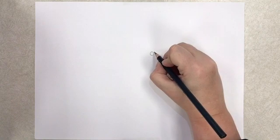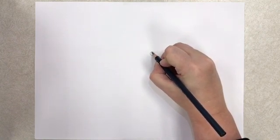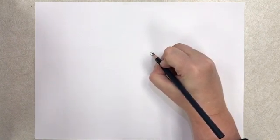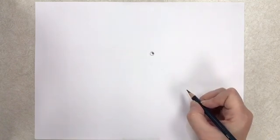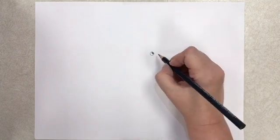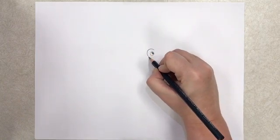Inside that small circle, I'm going to draw another circle. And I'm going to color that in. Now I'm going to draw another circle around that one.